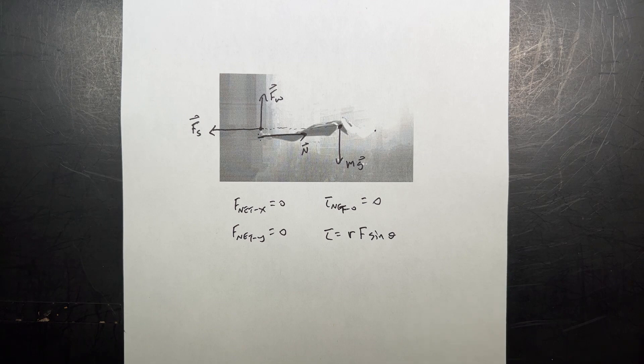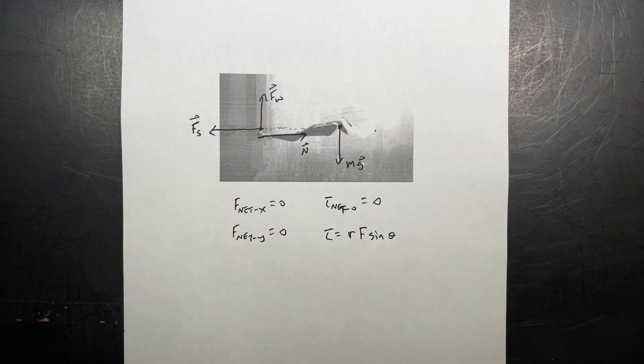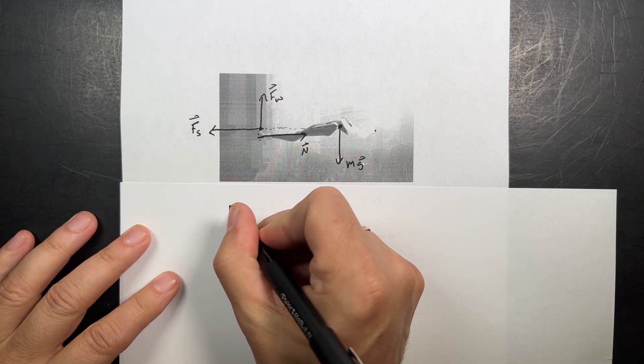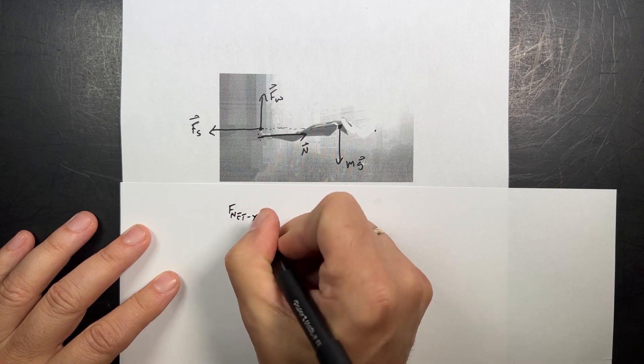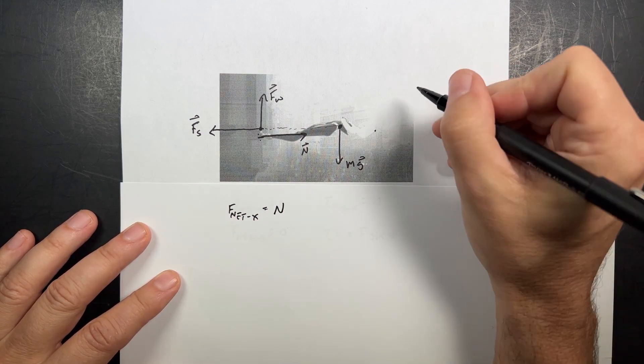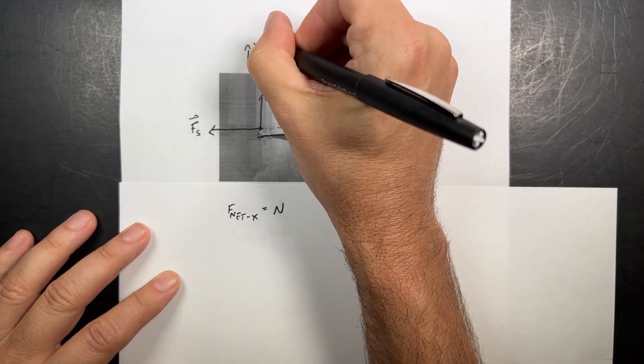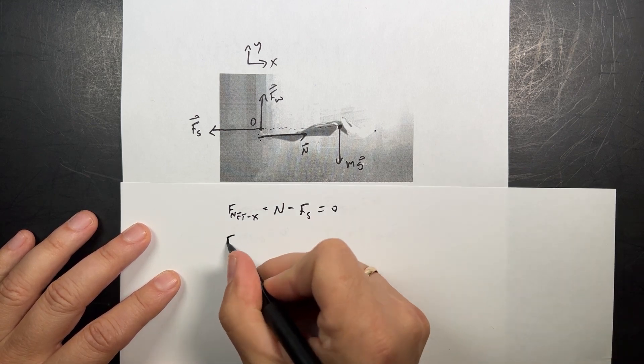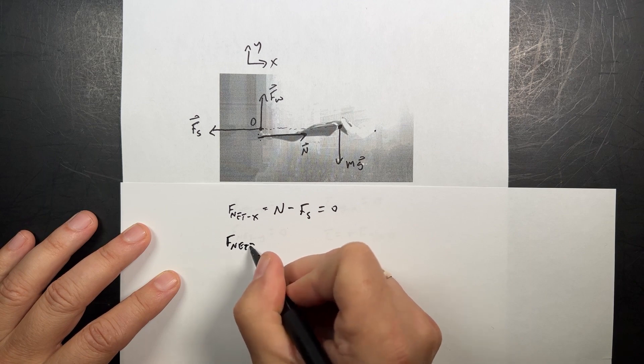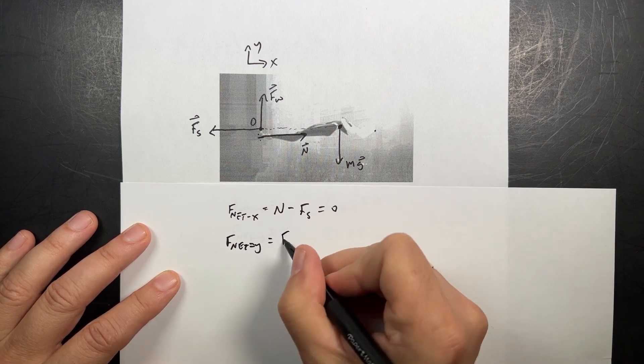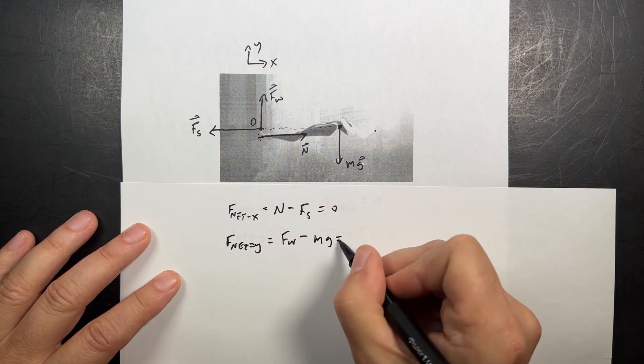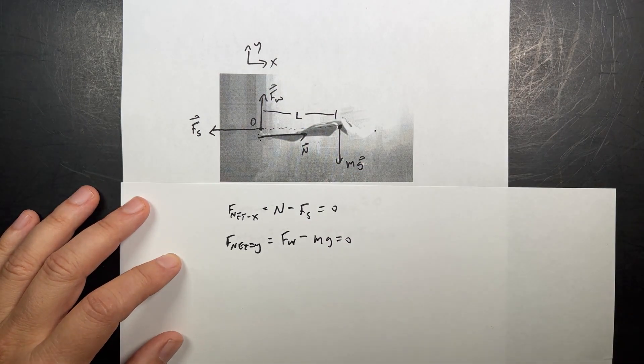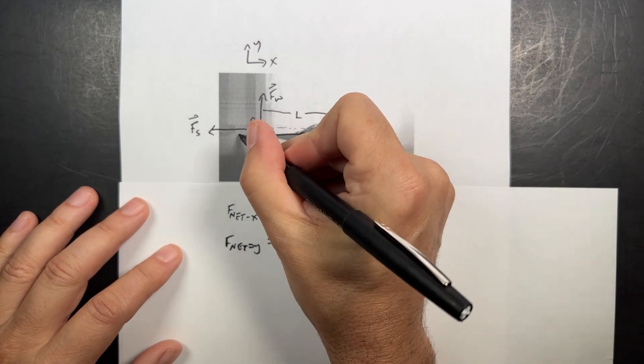We're going to write down the equations and calculate everything to see what kind of spider force this would take for her to stand on the wall. F_net_x: I have two forces in the x direction, so it's going to be N minus the spider force equals zero. F_net_y is going to be the wall force minus mg. Now let's call this distance L, the distance from the wall to her center of mass. And I'm going to call this distance S. It's going to be very short.